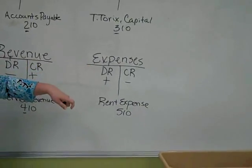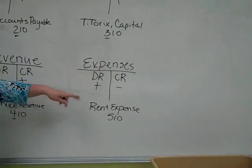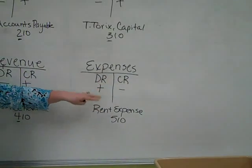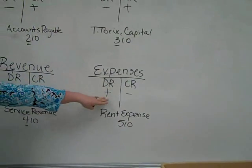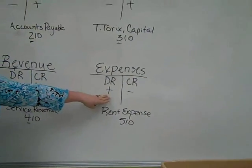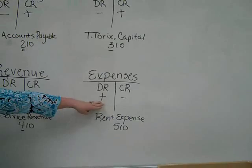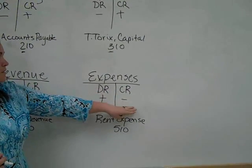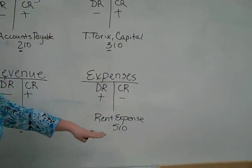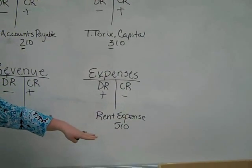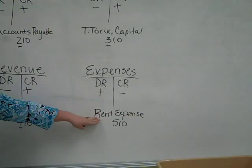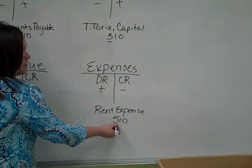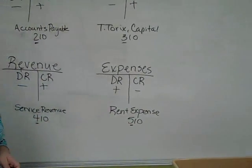Expenses is our final type of account: debit on the left, credit on the right. The rules for expenses are debits are recorded as increases and credits are decreases. An example account would be rent expense, and all expense accounts start with a five.